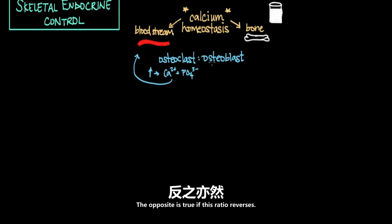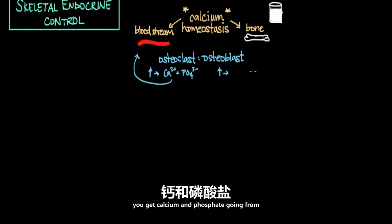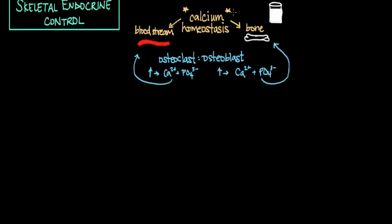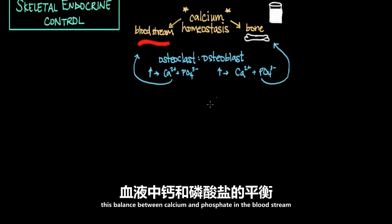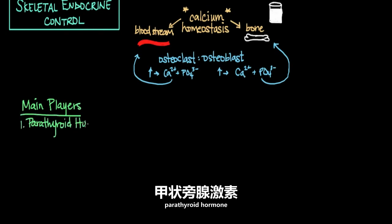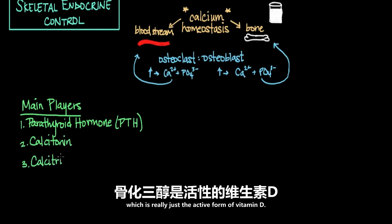The opposite is true if this ratio reverses: as the activity of osteoblasts increases, you get calcium and phosphate going from the bloodstream back into bone. So what are the main hormones responsible for maintaining this calcium homeostasis — this balance between calcium and phosphate in the bloodstream and in bone? The main players are parathyroid hormone, calcitonin, and calcitriol, which is the active form of vitamin D.